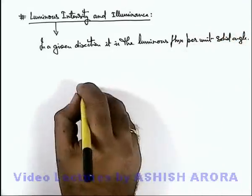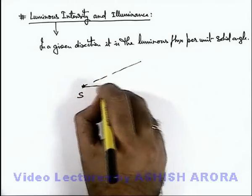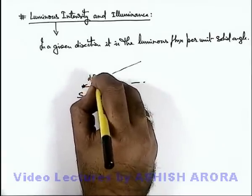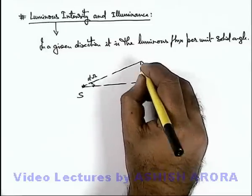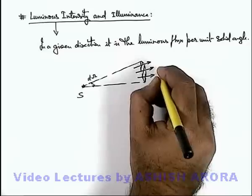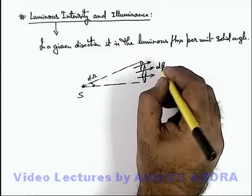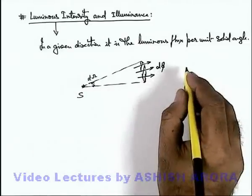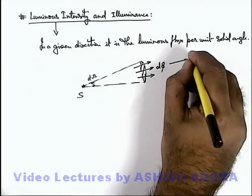Like if we are having a source of light S, and in a specific direction we consider a small solid angle which is dΩ, and in this region the total light energy which is coming out is dφ, that is the luminous flux which is emitted by the source in the solid angle dΩ in this particular direction.